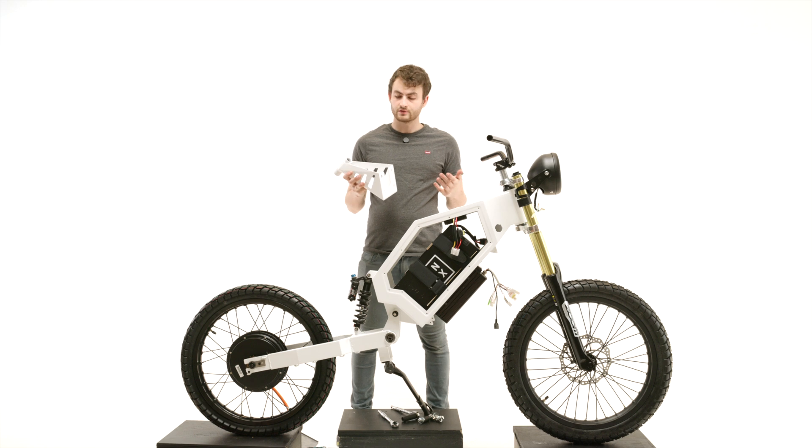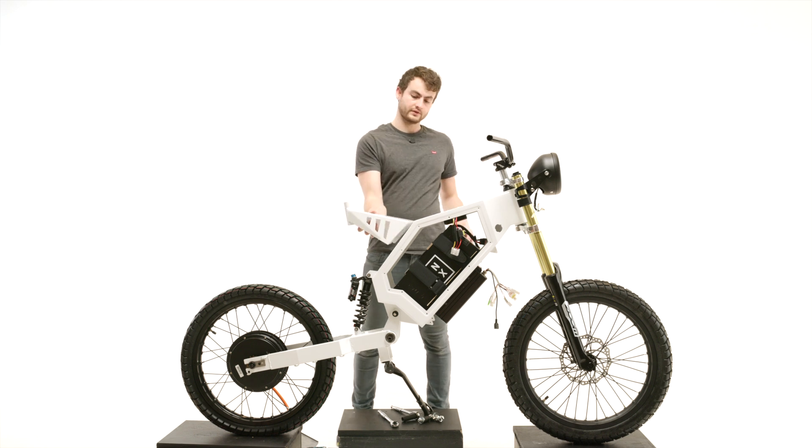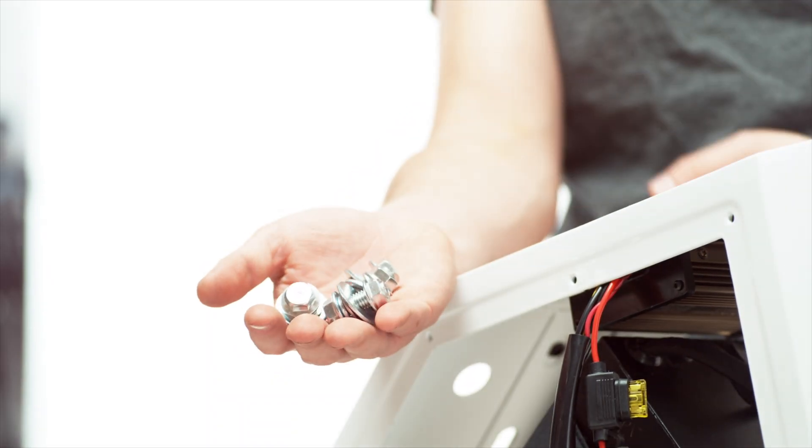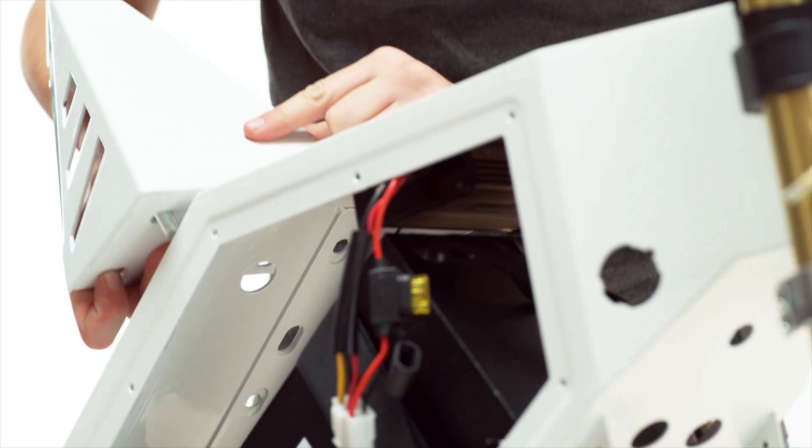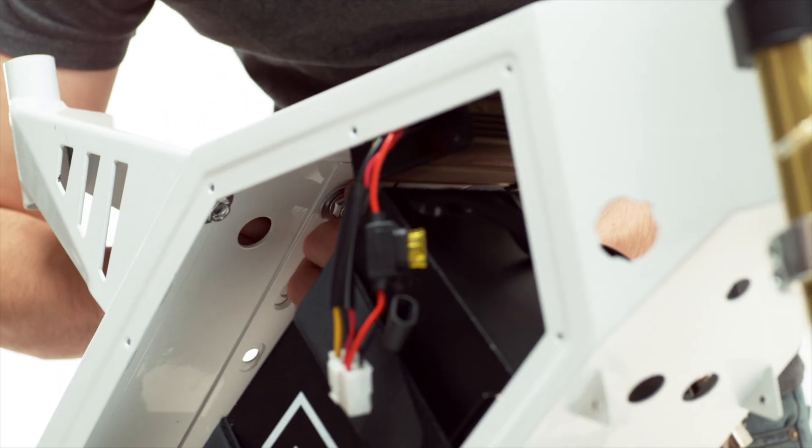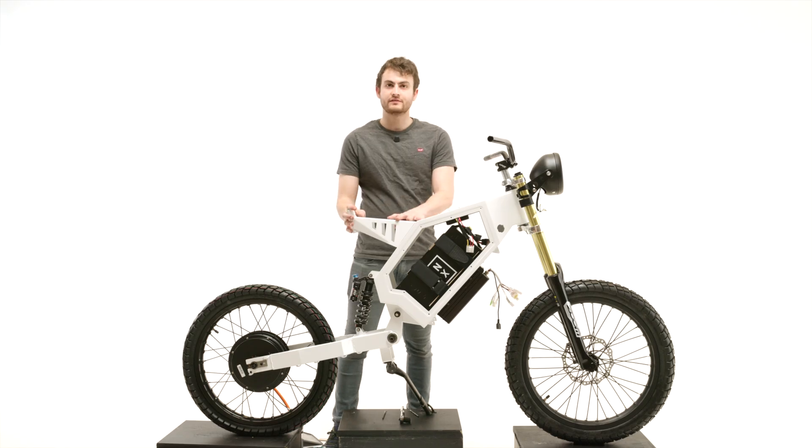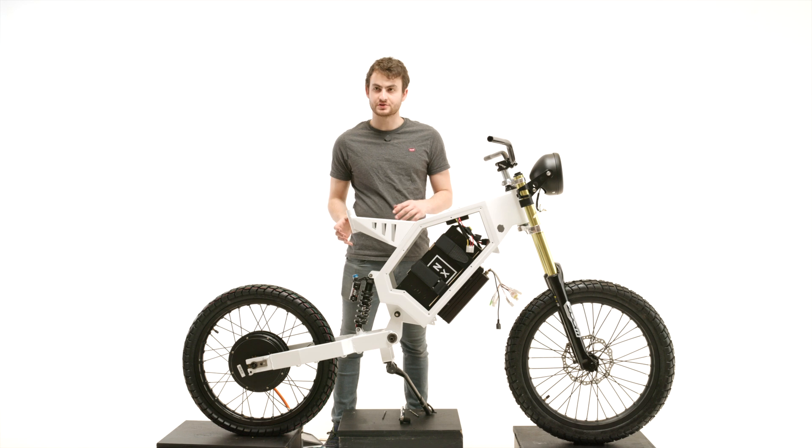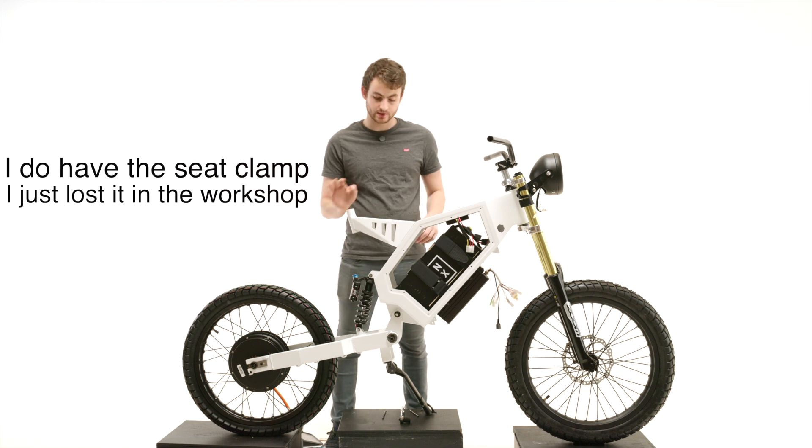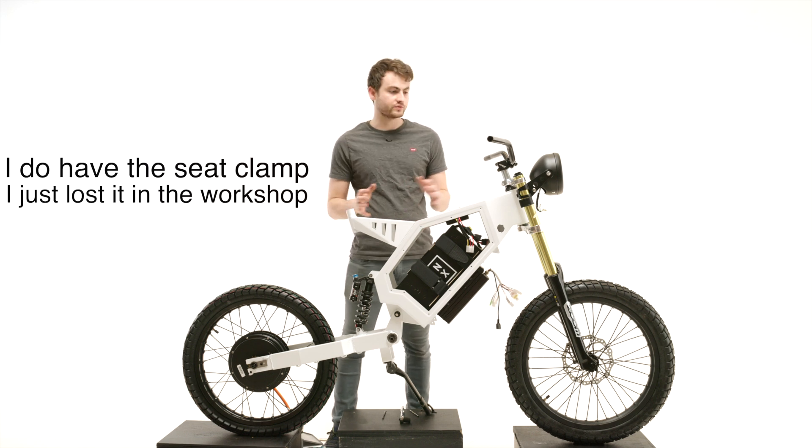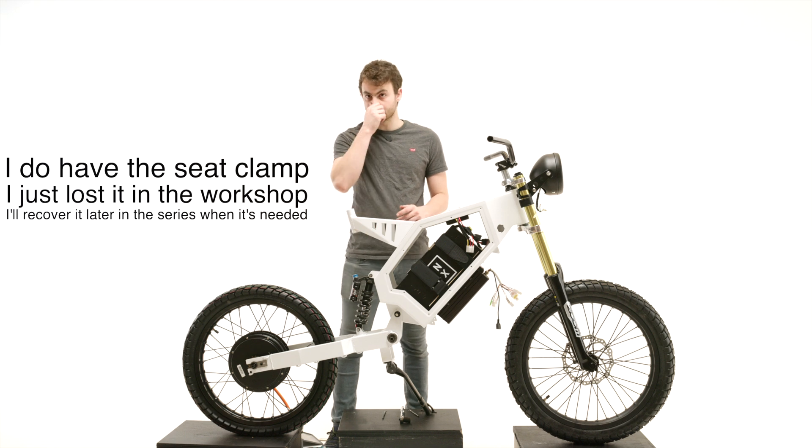Next, I want to throw the seat post on. We've got this white seat post that goes here. And the frame comes with four of these sets of screws and washers that allow us to attach it. So we've got the seat post mounted. Unfortunately, I don't have the seat clamp, so I can't put the seat on yet. But with that, almost all of the major assembly is completed.